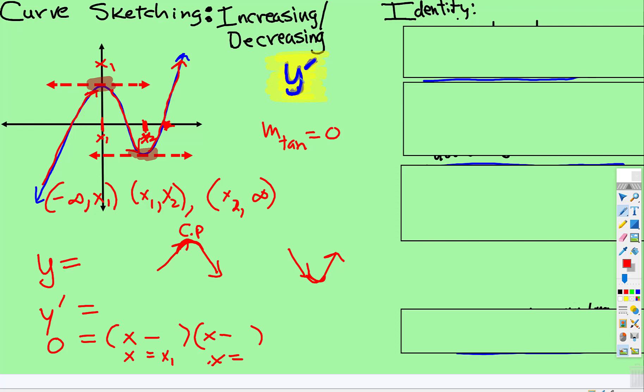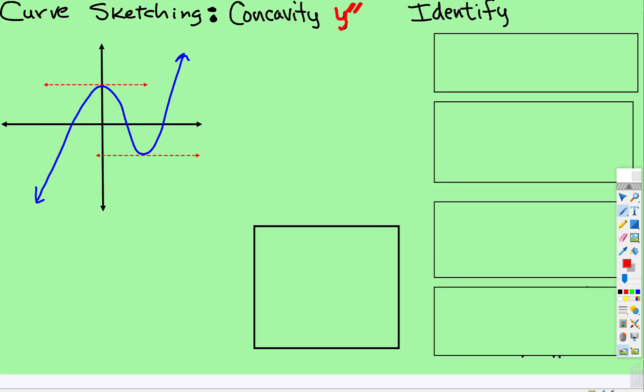Alright, so that's the first derivative, deals with increasing, decreasing, and critical points. The second derivative deals with the concavity.